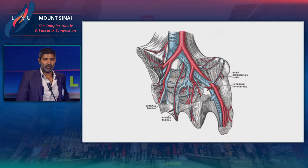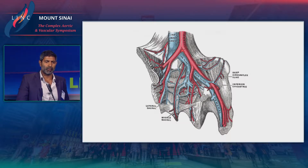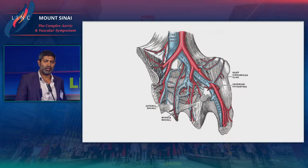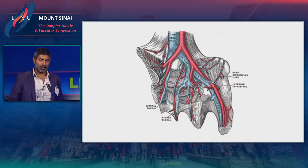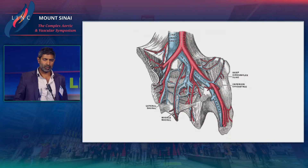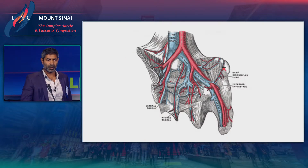To first define the venous compression syndrome, the most common one, the May-Thirner that we all discuss, is the crossing of the right common iliac artery over the left common iliac vein. But that's not where it ends. You have all of these different points at which the pulsating artery is up against a bony structure posteriorly, and along any part of that you can have an external venous compression. Obviously tumors and nodes can also cause venous compression if you have some sort of pathology in the pelvis.